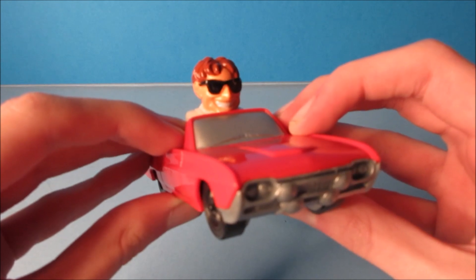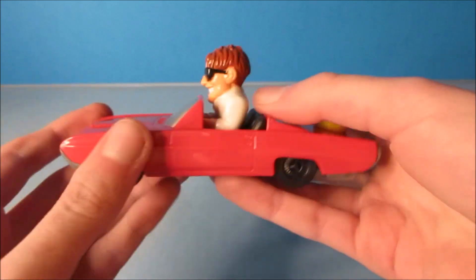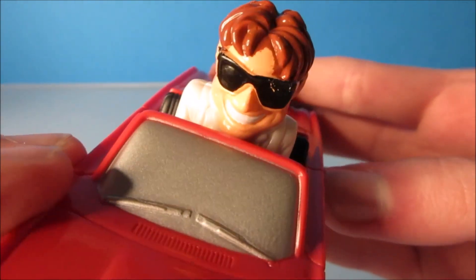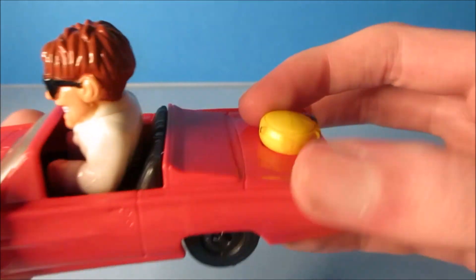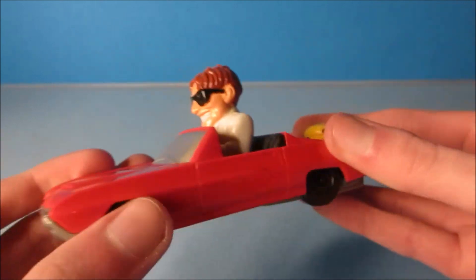Next on the set is Action T-Bird. This one looks so cool, it's like a little red Thunderbird car. You can see Professor Brainerd looking all kinds of cool with his shades. There's Weebo on the back of the car. You can spin it and that is it for movement.